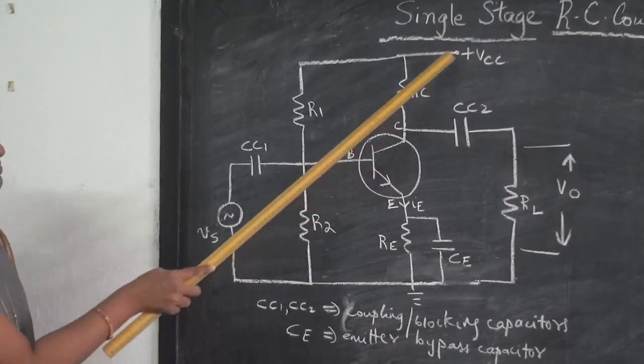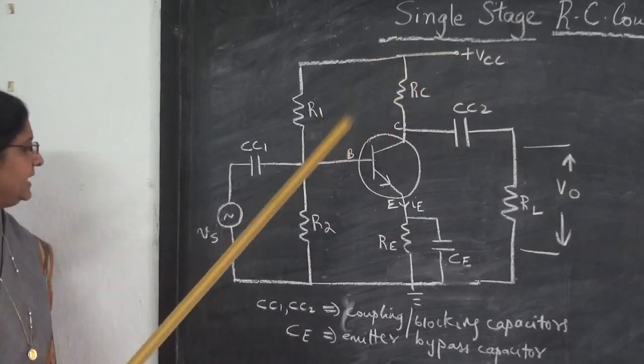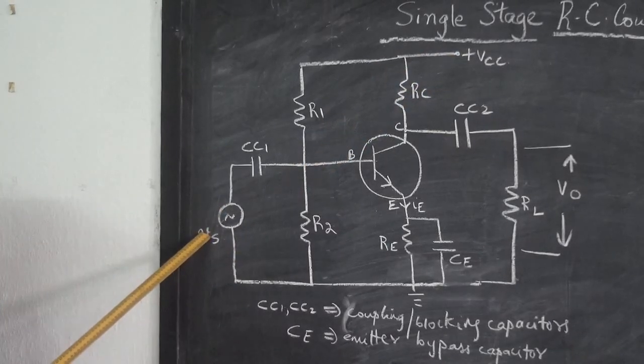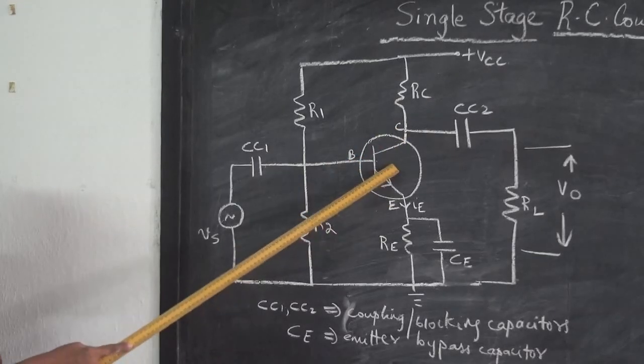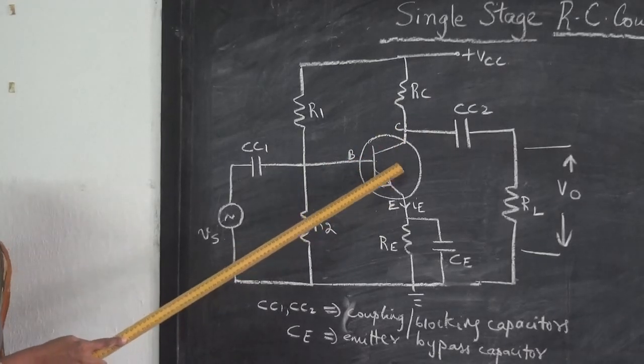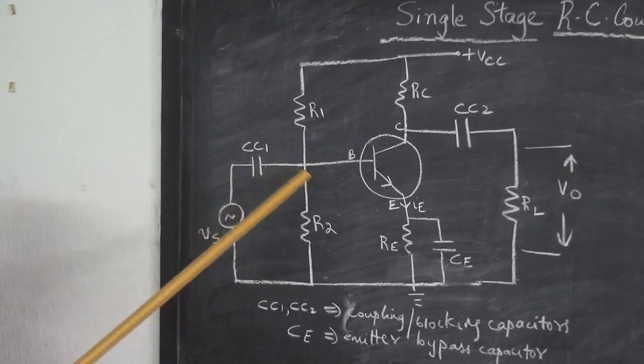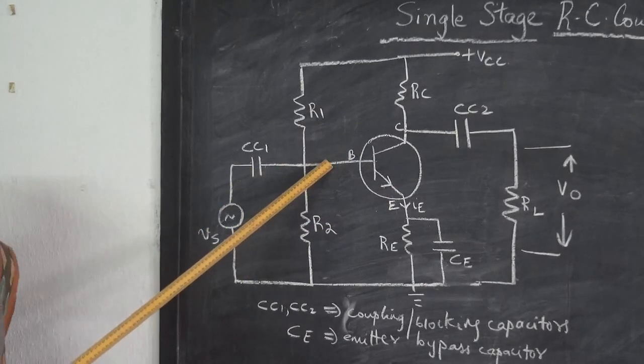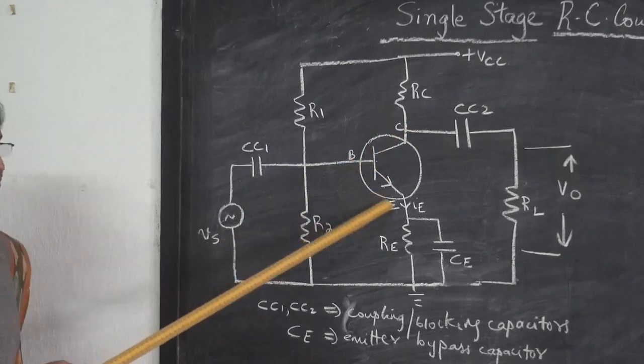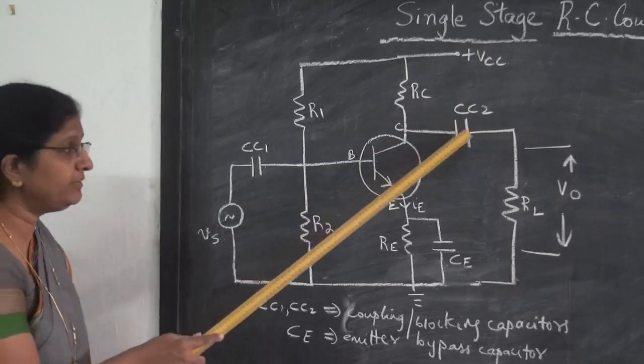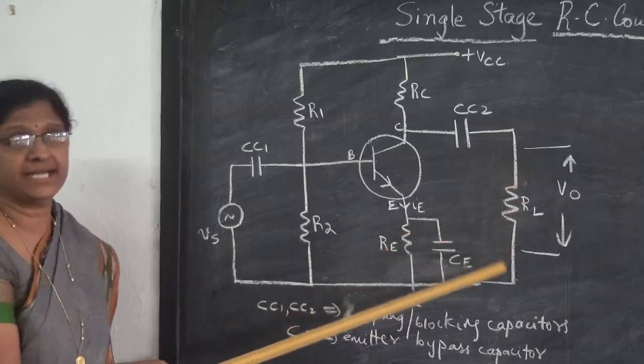Now the working is: you switch on VCC and the AC voltage is also switched on. The transistor is ready in the active region, ready to be used as an amplifier. Now this AC voltage is superimposed on the DC here. The base current which passes through the transistor gets amplified and you get an amplified collector current.